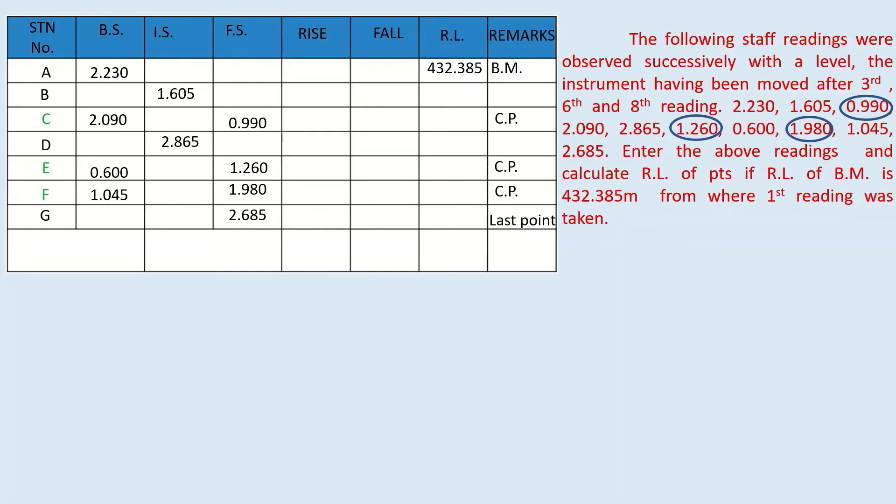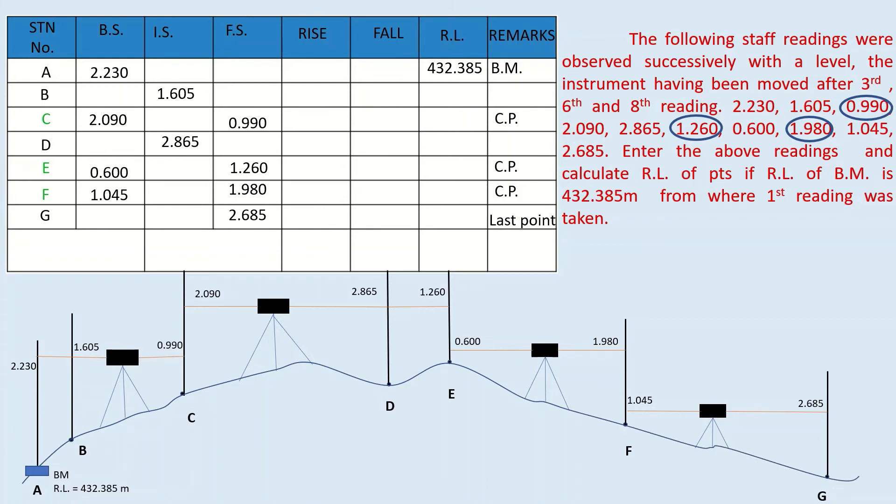You can solve your problem without drawing the profile. For better understanding, let us draw the profile. Keep your benchmark here. Mention the back side reading observed at A which is 2.230 as such. As you move from A to B, staff reading decreases. Hence, ground level rises. So this may be your B's location. Intermediate side observed at B is 1.605. From B to C, again staff reading drops down. Hence the profile rises. At same C, back side was observed which was 2.09. From new instrument position, staff reading at B is taken which is greater than that of the back side at C. So the ground at B will be in a lower position. In similar fashion, plot the remaining profile as well. Join them. You will get the profile completely from A to G.